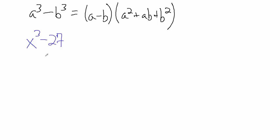Now we've talked about it a couple times before - remember that 27 is 3 times 3 times 3, which is 3 cubed. So then this is really x cubed minus 3 cubed. So this is indeed a difference of cubes, so we can use this formula here.